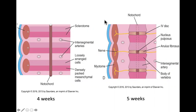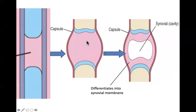Welcome to the second part of lecture 12. In part one, we learned about endochondral and intramembranous bone formation, how cartilage forms, the formation of the long bones of the appendicular skeleton, and we talked a little bit about joint formation. Today, we are going to talk about the formation of the axial skeleton, which for purposes of this class consists of the head, spine, ribs, and sternum. We're going to start with the spine.